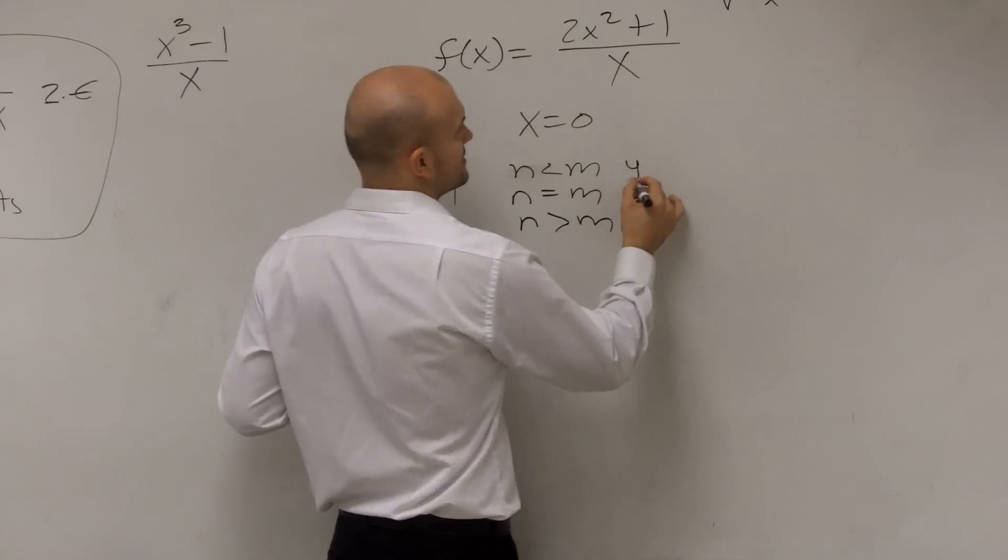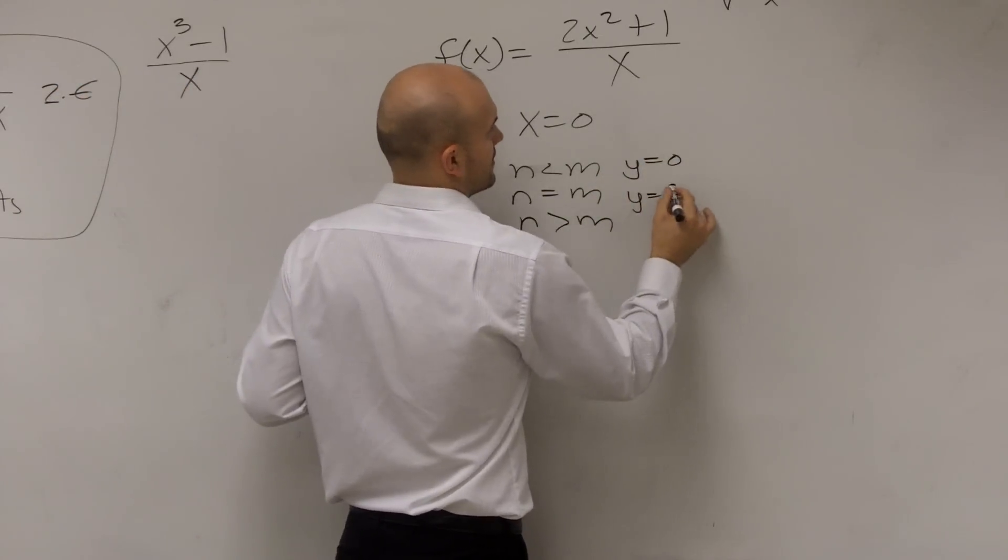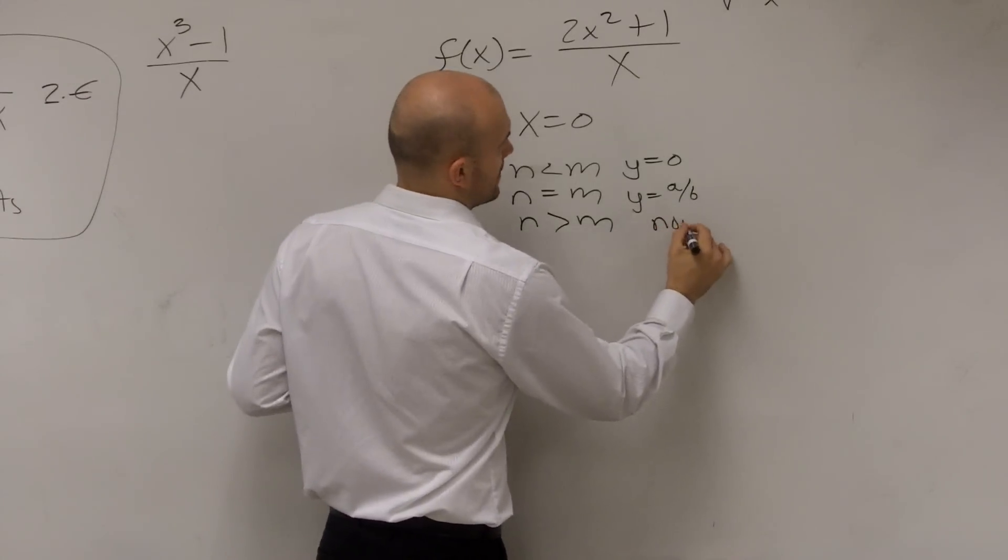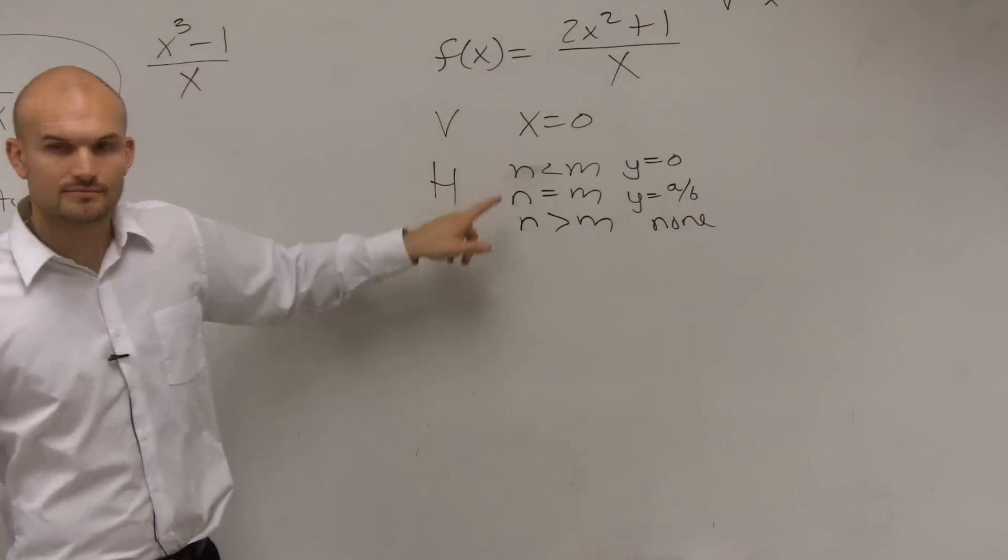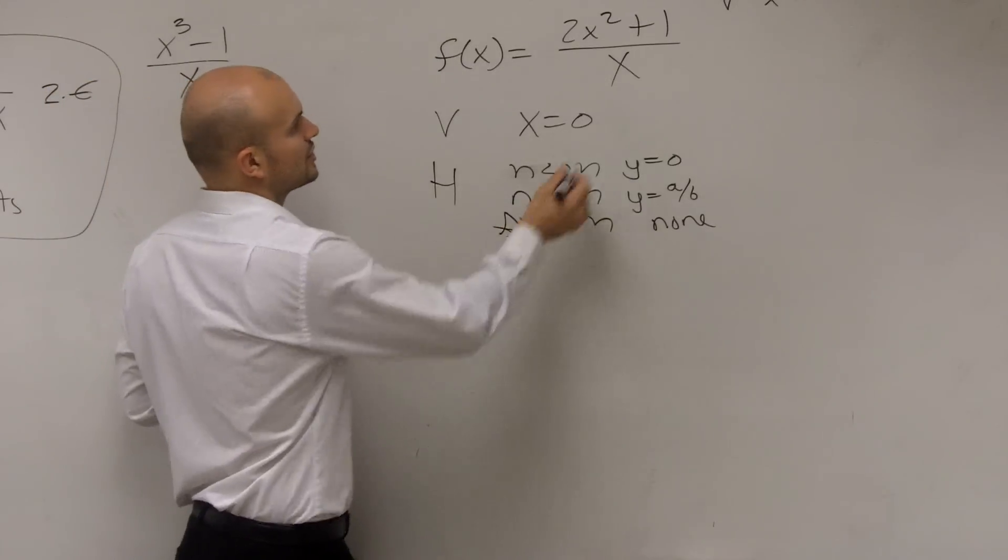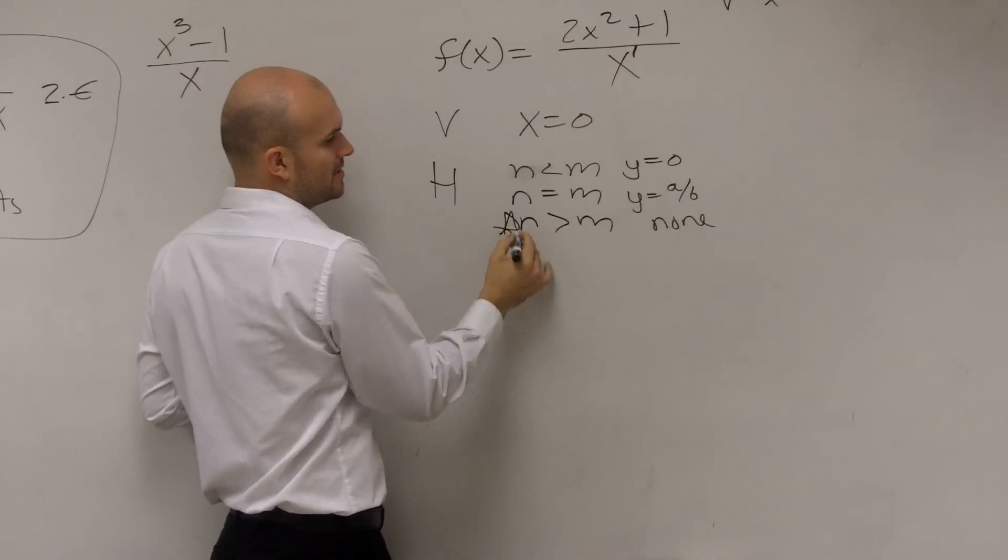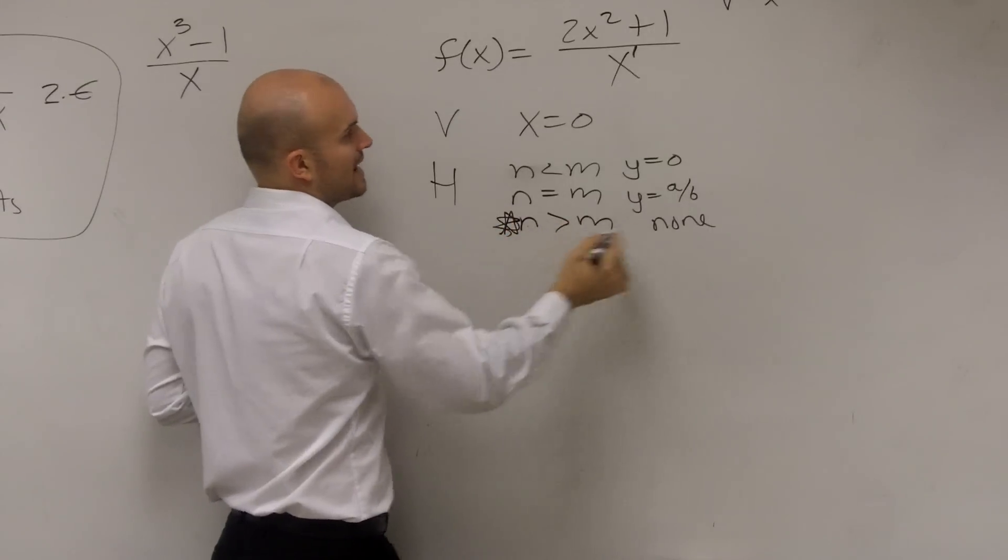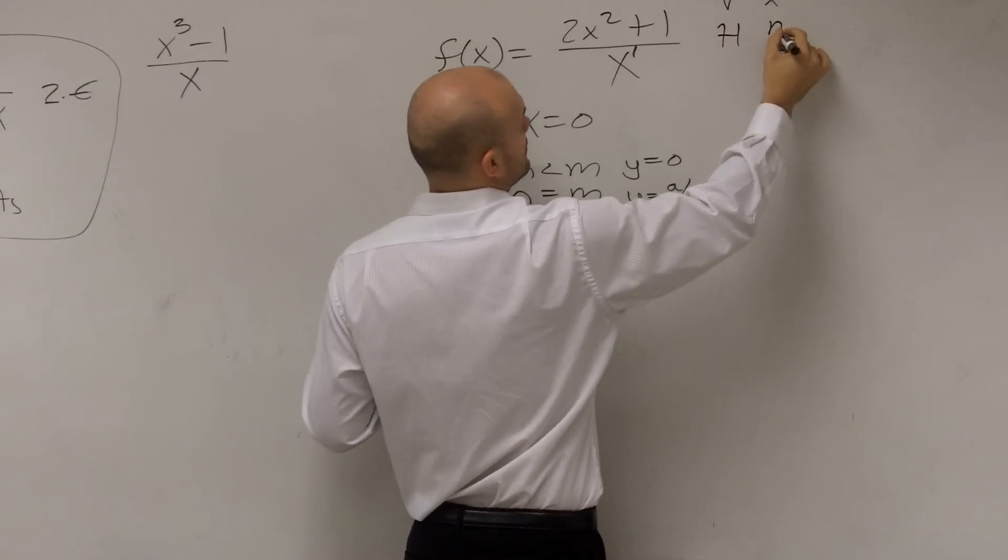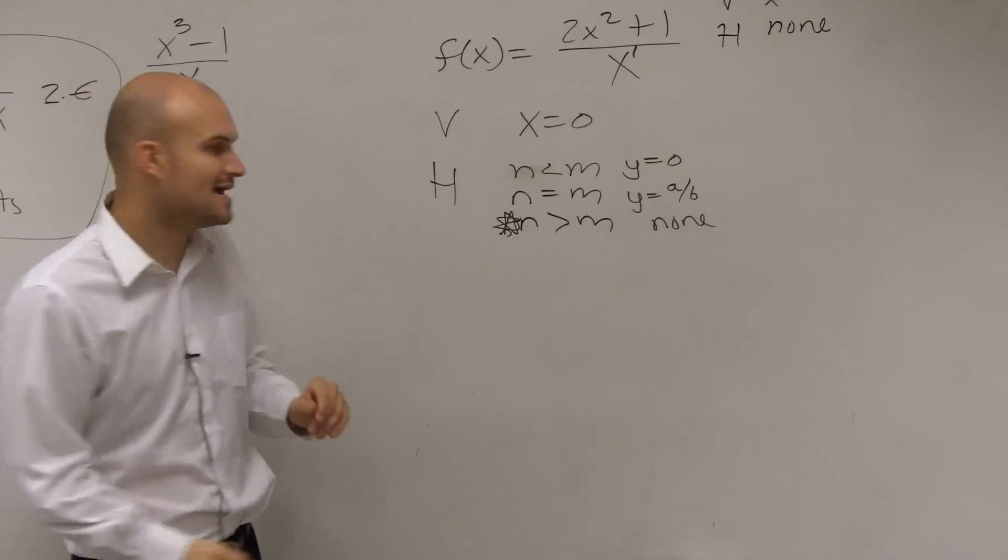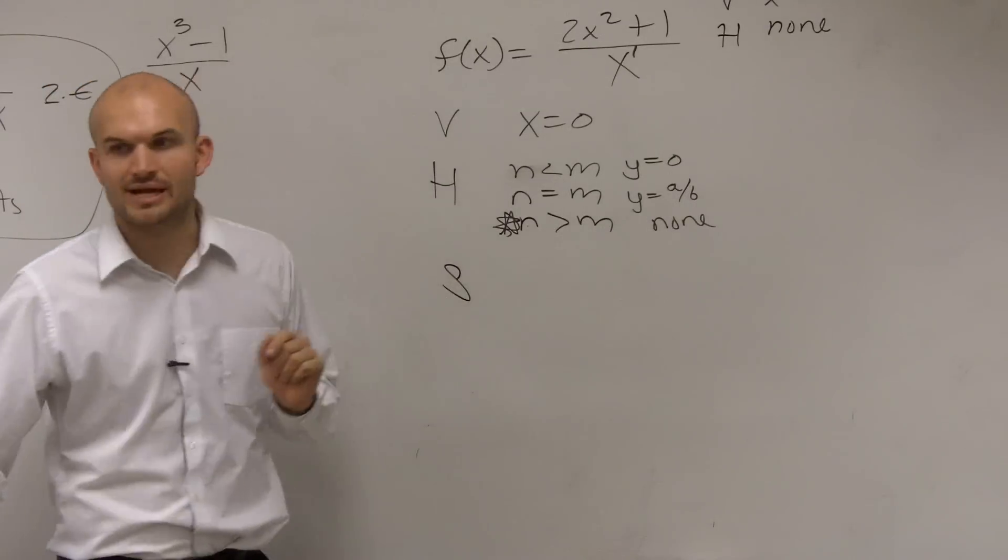Remember, for each one of those, you need to know each one equals your leading coefficient over your leading coefficient. And which one do we have? The degree in my numerator is larger than the degree in my denominator. So n is greater than m. So our horizontal, we do not have. All right? When we don't have a horizontal, that tells us we're going to have a slant.